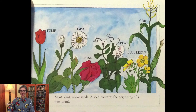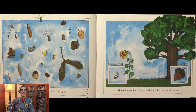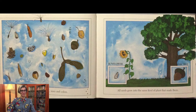Most plants make seeds. A seed contains the beginning of a new plant. Seeds are different shapes, sizes, and colors. All seeds grow into the same kind of plant that made them. So a sunflower seed grows into a sunflower and an acorn grows into an oak tree.